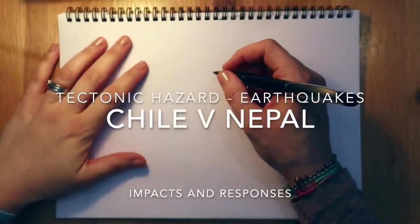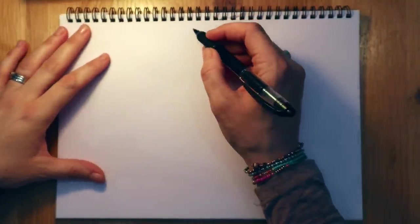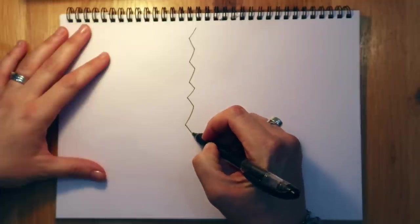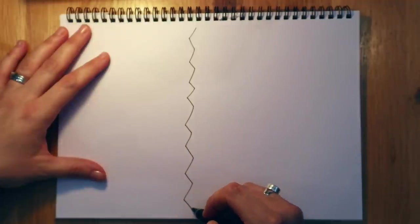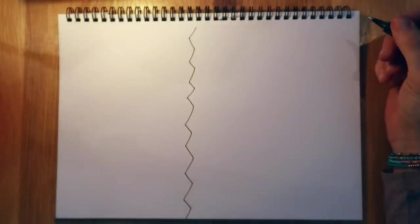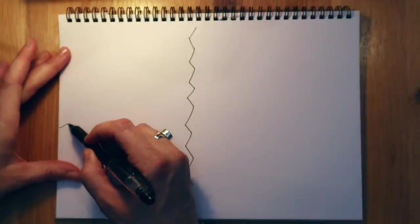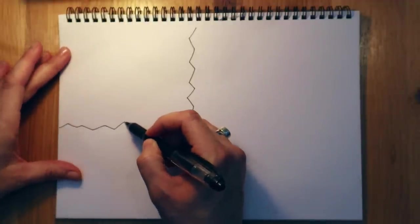Hi folks! So today we're going to have a look at two contrasting earthquakes. I'm going to start by just drawing our fault line down the middle of our book, or roughly, and then another one across your book.